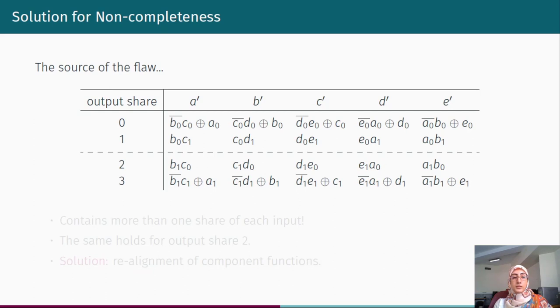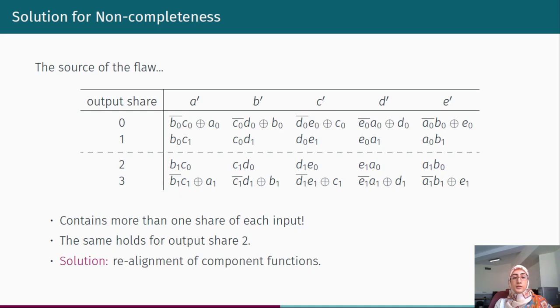How can we fix this issue that is the result of register omission at the middle of Chi and theta? Our further investigations show that the leakage originates from the fact that the alignment of the component function in DOM scheme is in such a way that every output share contains more than one share of each input. The same holds for output share two. So our solution would be introducing a new alignment that is compatible with the lack of in-between register.